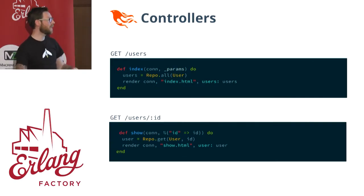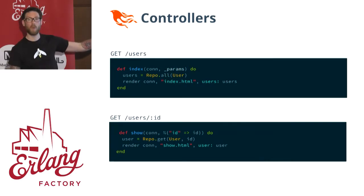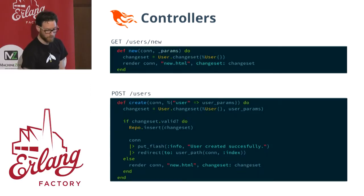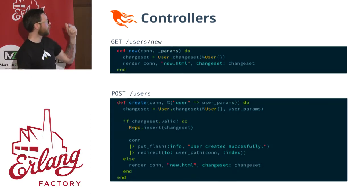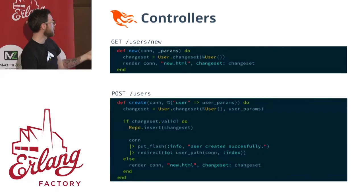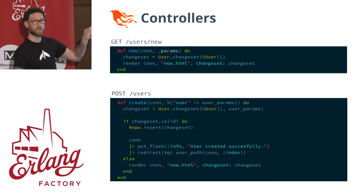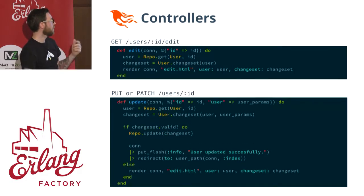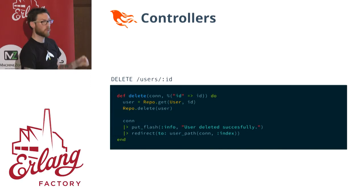GET users/:id will have an actual ID posted into the parameters for your call so you can find the user and render that to the page. The new action sets up a form so people can submit to the create action. In create, you take the params from the form, put it into the database, and redirect back. Similarly for edit and update, and then of course delete.